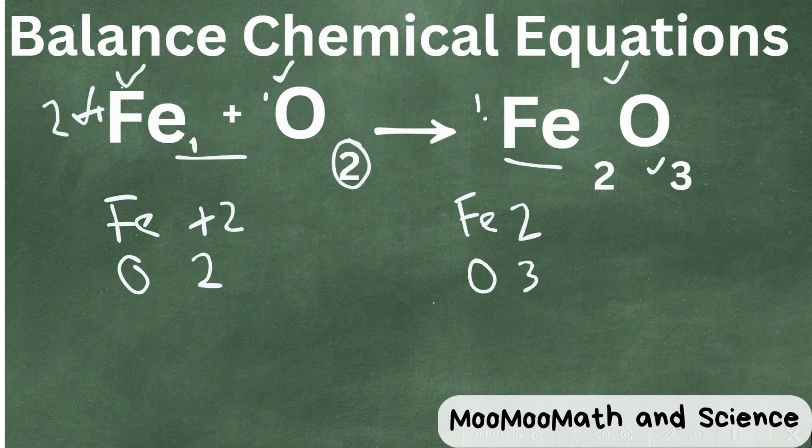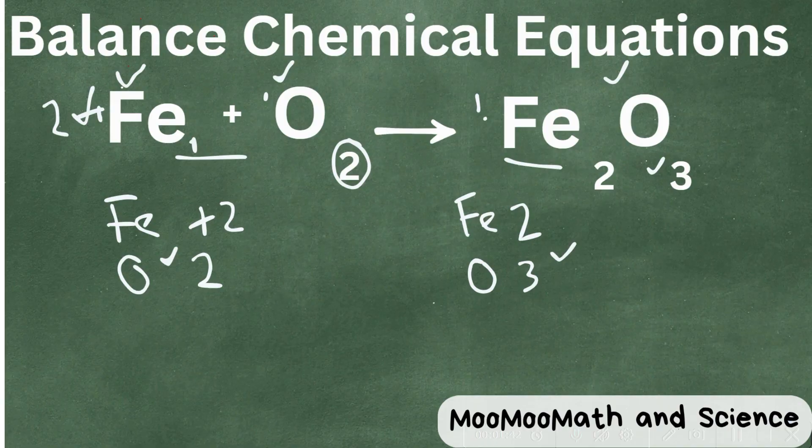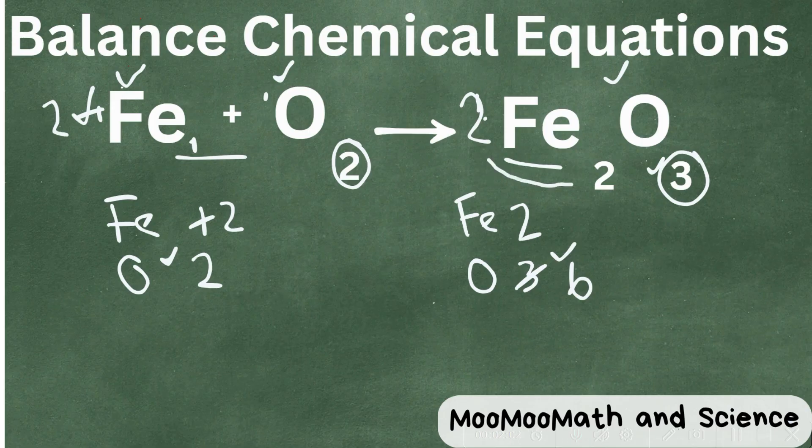We have 2 on the reactant side and 3 on the product side. So we need to find a common denominator, which is 6, so let's go ahead and start changing the oxygen. If we multiply 2 here, 2 times 3, that's going to equal 6. So we've got 6 here, but we also need to multiply the iron. So now we have 2 times 2, and now that becomes 4.